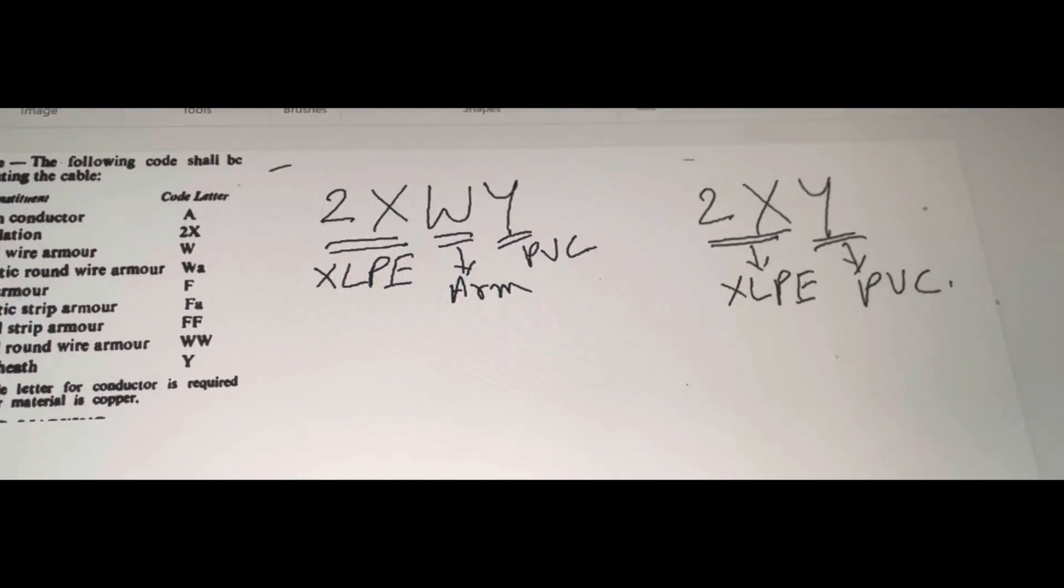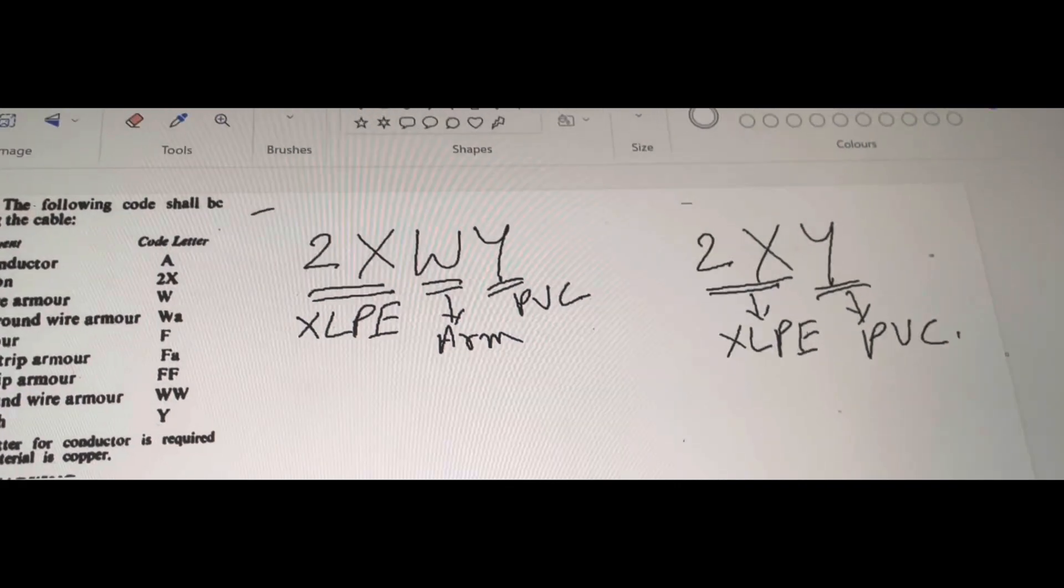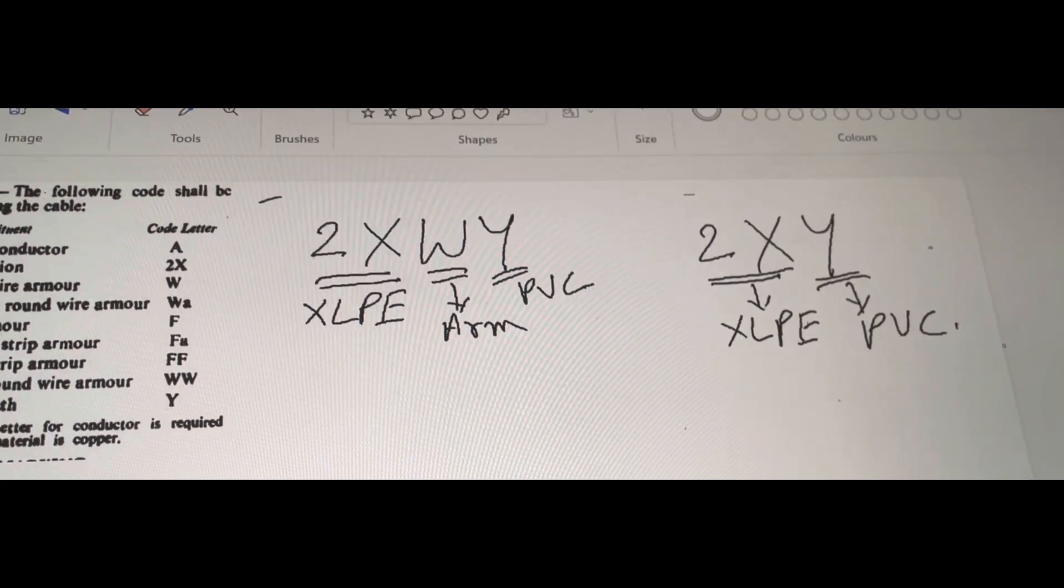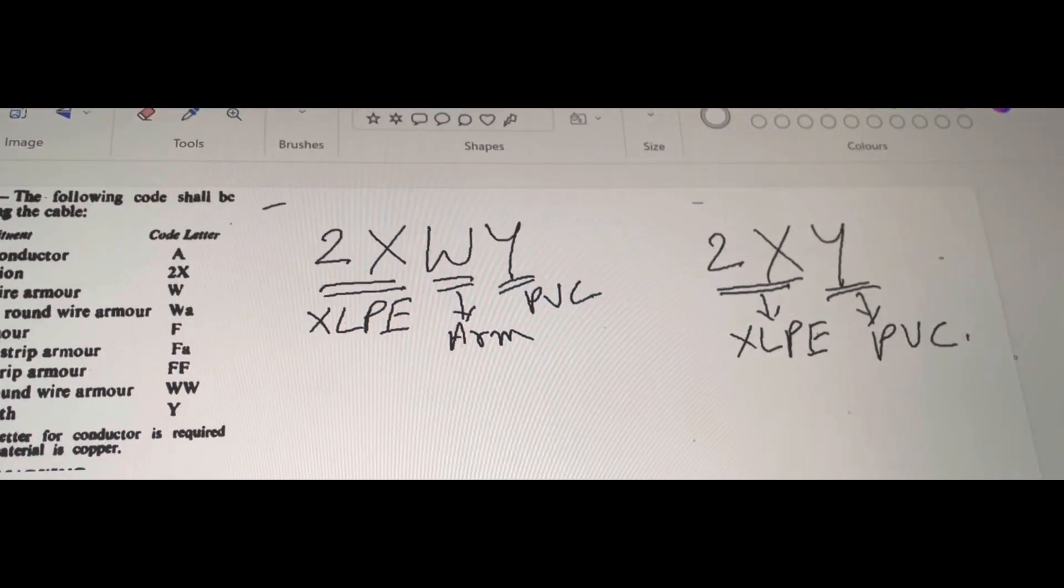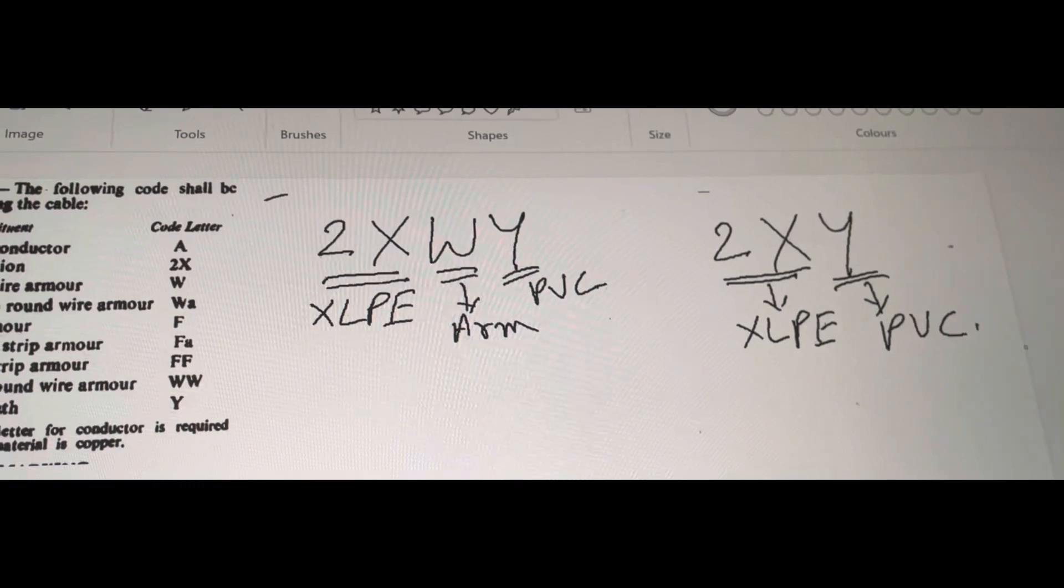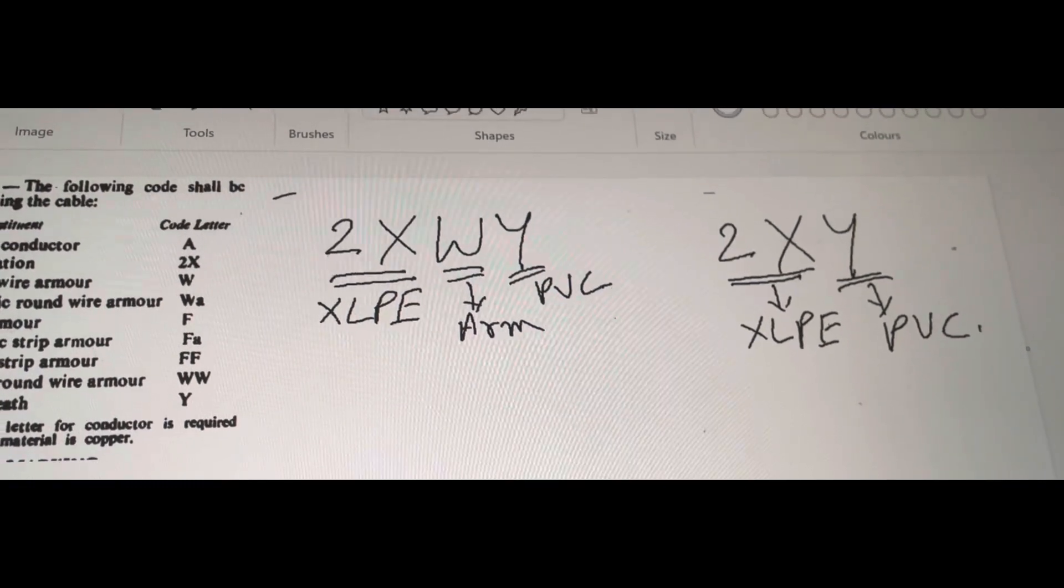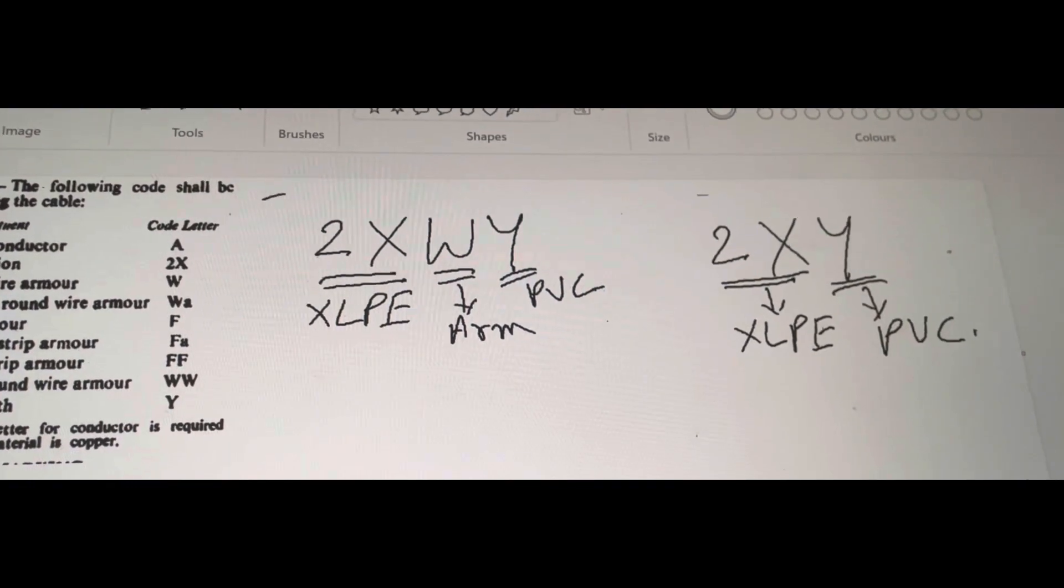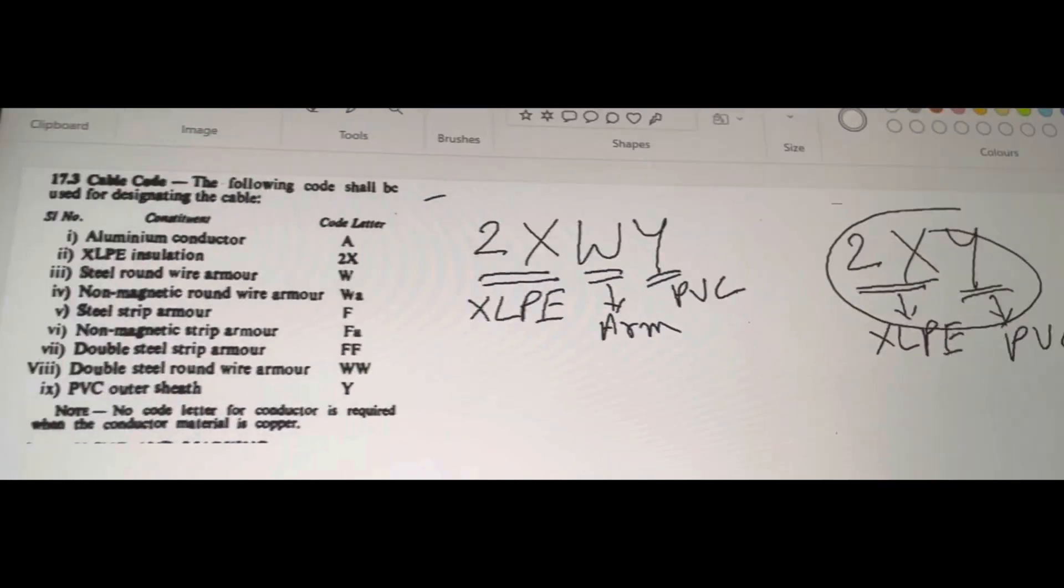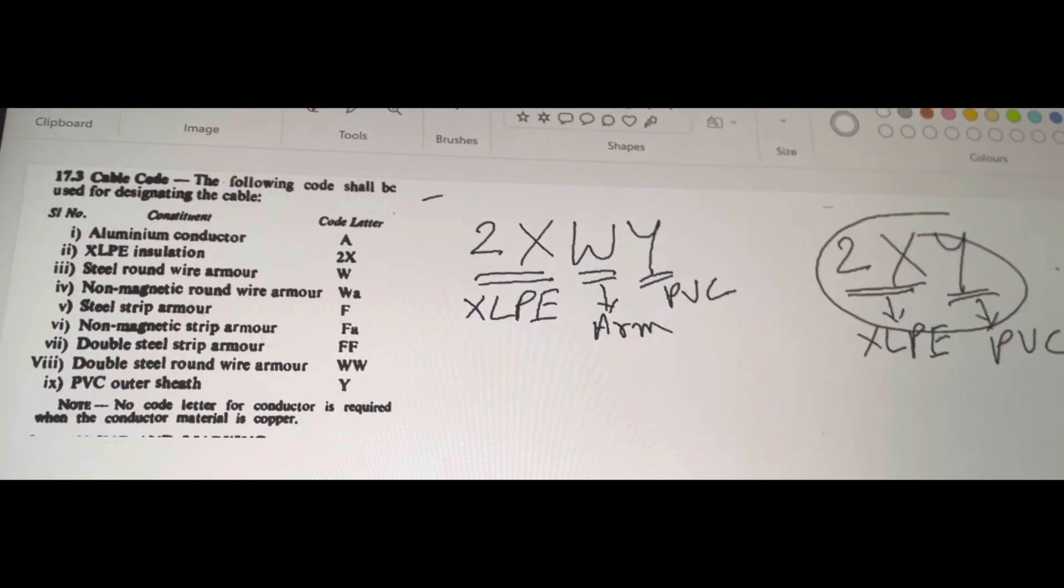And you can observe that there is no letter called w in this particular code. The meaning is there is no armoring present in this particular cable. As there is no letter called w we can assume that there is no armoring present in this particular cable. So, this is the way to interpret this particular cable code.